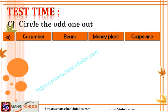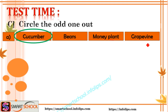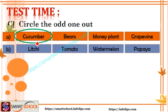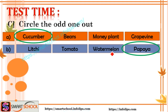Test C: Circle the odd one out. Among cucumber, beans, money plant, and grape vine — the odd one is cucumber, because beans, money plant, and grape vine are all climbers, and cucumber is a creeper. Among lychee, tomato, watermelon, and papaya — the odd one is papaya, because papaya is a tree and the others are creepers.